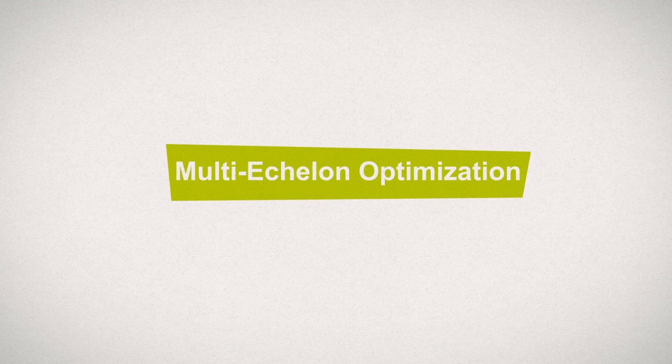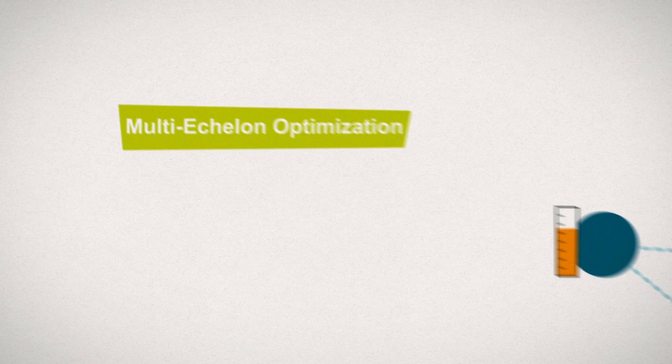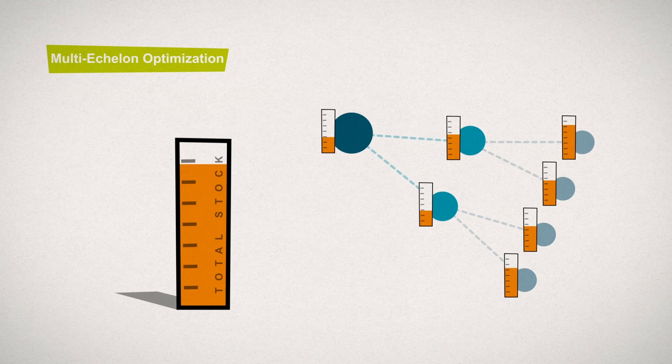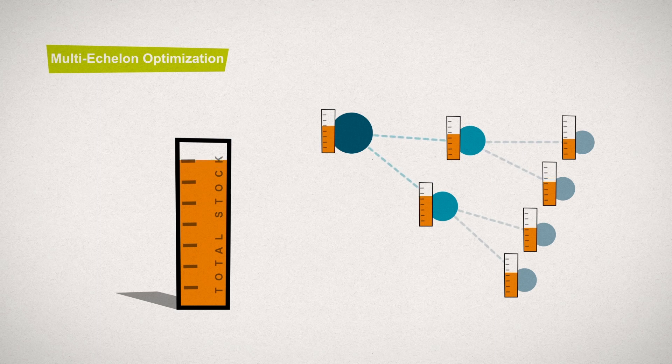Multi-echelon optimization. Have you ever wondered how you could reduce your inventory levels within your distribution network while at the same time ensuring high availability?